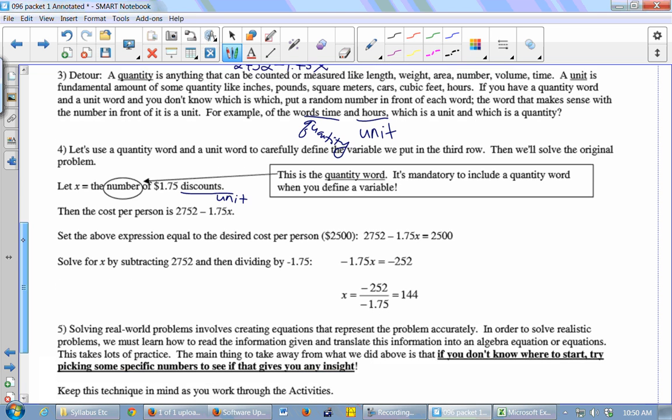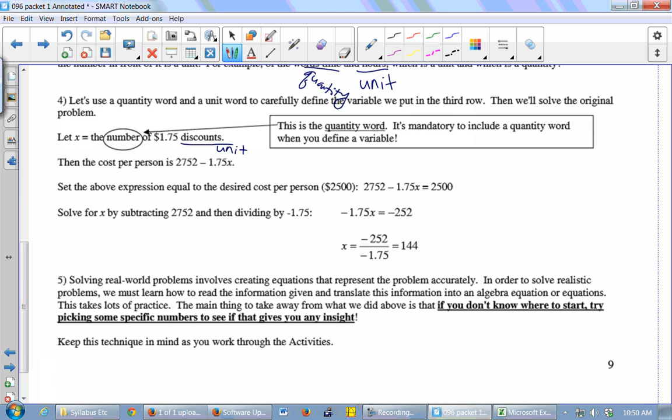We practiced solving a bunch of equations last class. So the first thing you do would be subtract $2,752 from both sides. Then divide both sides by negative $1.75. And you get 144 people. So you would need a group of 144 people to get the cost down to $2,500 per person.